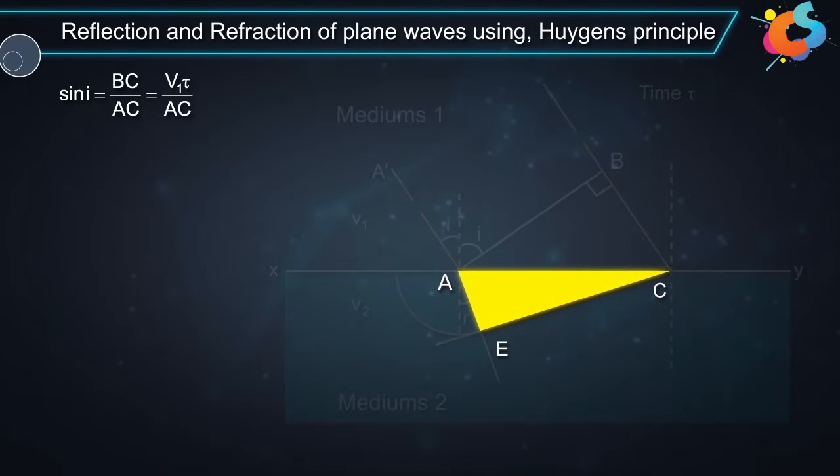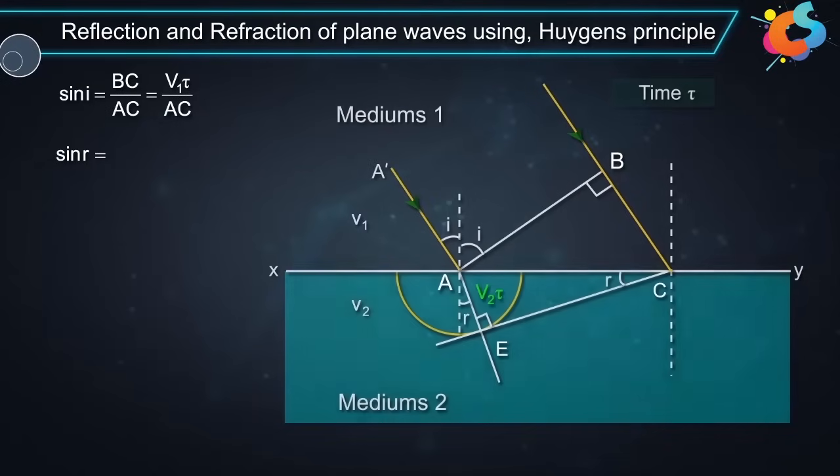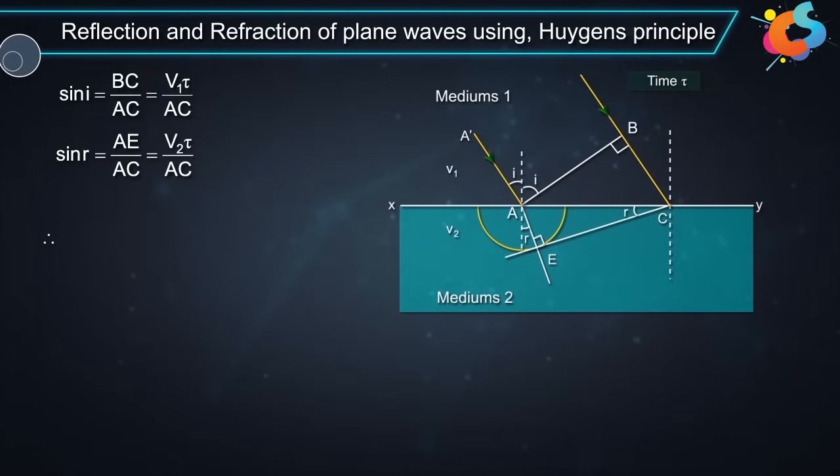And from triangle AEC, sin R is equal to AE divided by AC which is equal to V2 tau divided by AC.